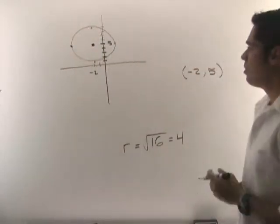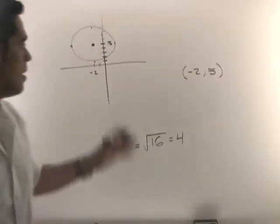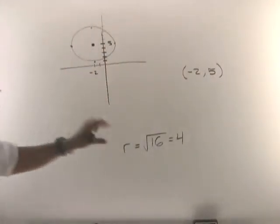So that's the graph of the circle given the equation that we were given in the beginning. And remember the center is at negative 2, 5 and the radius was 4.